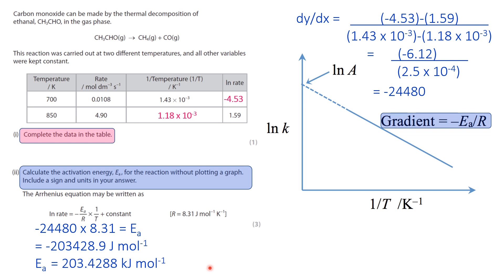Now, minus 24,480 is the gradient. So that's your minus Ea over R. We want to isolate Ea. So to do that, you multiply minus 24,480 times 8.31, which is the value that you're given here. So that gives us this large number here.